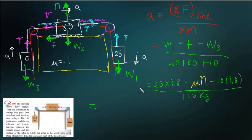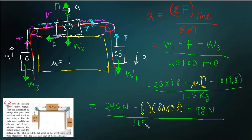Equals plus 245 minus 0.1 times the normal, but the normal is just this guy's weight, which is 80 times 9.8 minus 98 all over 115.